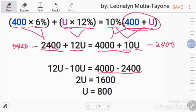This 12U and 10U. How to cancel? Subtract 10U here. Subtract 10U here too. So, it will cancel. Here, what remains is this. 12U minus 10U. That means 2U equals 4,000 minus 2,400. That is 1,600.